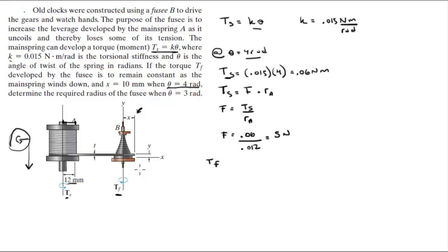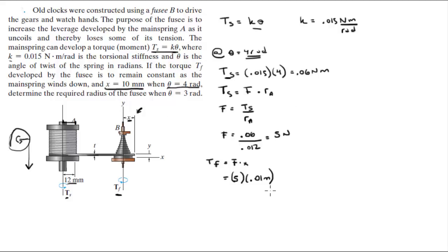Now, Tf — the torque moment of the fusee — equals the same force times x, where x is the radius of assembly B. So Tf = 5 × 0.01 meters (x = 10 mm at θ = 4 radians), which gives Tf = 0.05 Newton-meters.